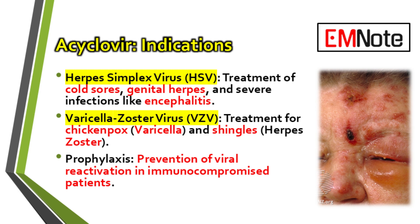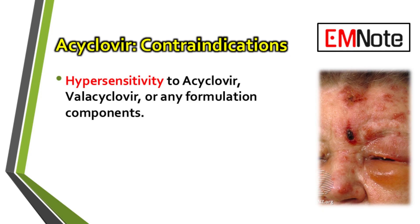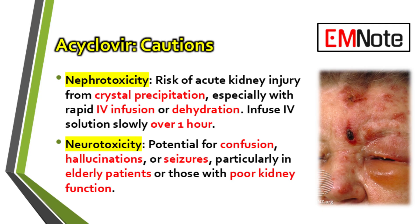Prophylaxis with acyclovir is also a critical strategy in specific patient populations, such as organ transplant recipients, to prevent the devastating consequences of viral reactivation. While acyclovir is generally well-tolerated, clinicians must be acutely aware of its potential contraindications and cautions. The most significant concern, particularly with the intravenous formulation, is dose-dependent nephrotoxicity. Acyclovir is primarily eliminated by the kidneys, and if administered too quickly or in a dehydrated patient, it can precipitate within the renal tubules, leading to acute crystalline nephropathy.